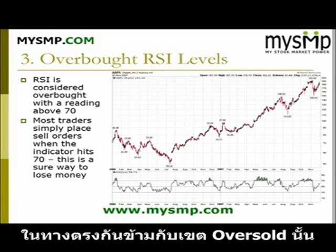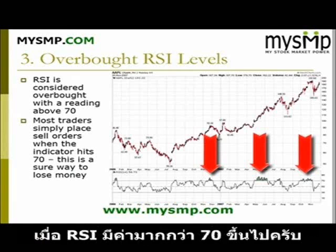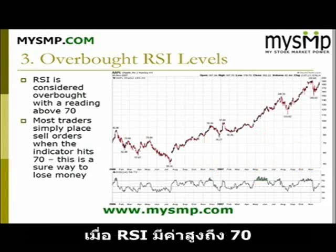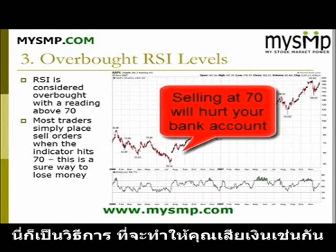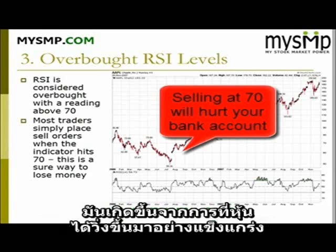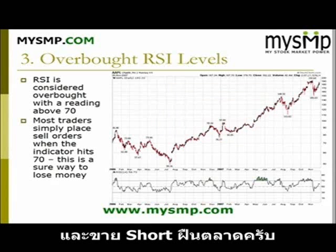Conversely, to an oversold level, there is an overbought territory for the RSI indicator. This comes into play once the indicator reaches a reading of 70 and above. Most traders will place sell orders once the indicator hits 70. This is also a sure way to lose money. Again, extreme readings in the RSI occur for a reason. So if the security is experiencing a strong move, a trader does not want to go against the primary trend and open short positions.